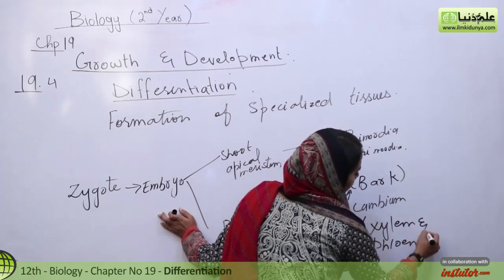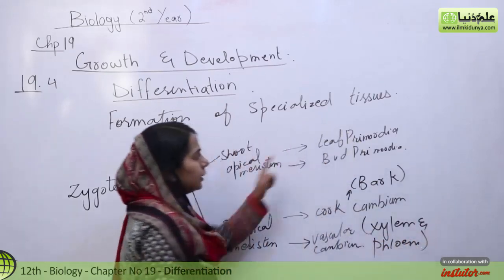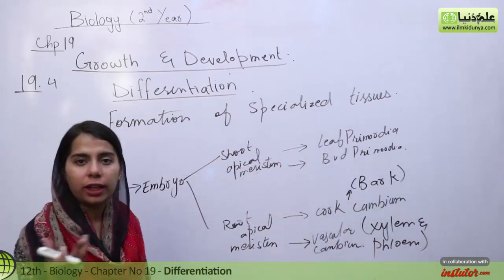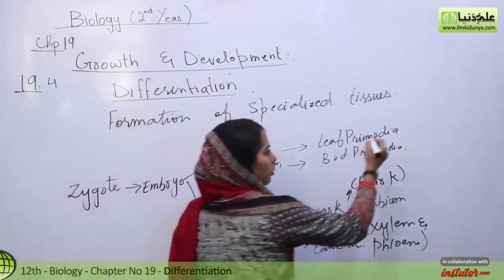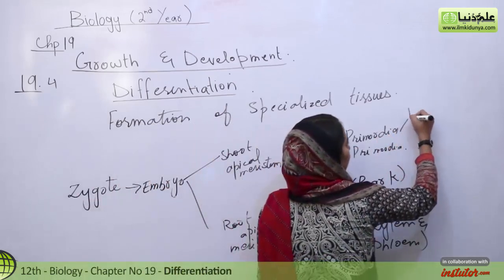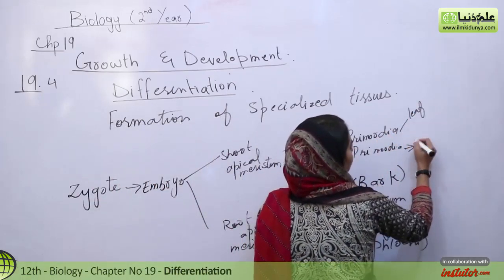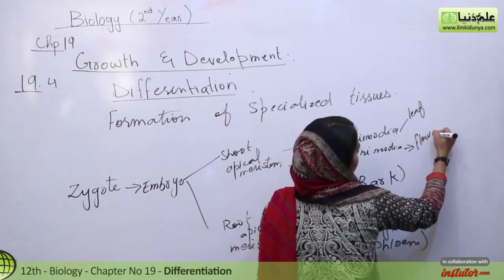From leaf primordia, leaves will become. And from bud primordia, flowers will become.